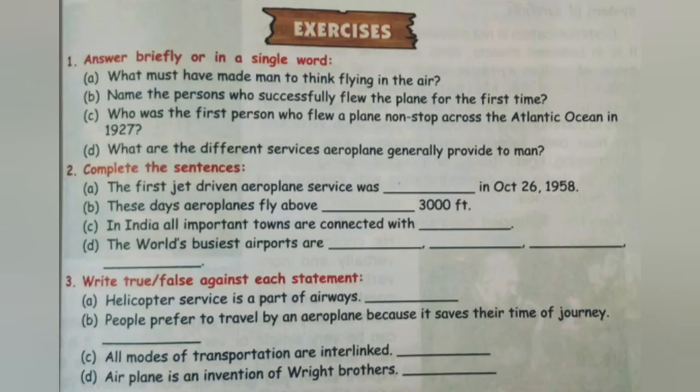Now look at the exercise of this chapter — complete the sentences. The first jet-driven aeroplane service was Boeing 707, on October 26, 1958. These days aeroplanes fly above the weather zone at 30,000 feet. In India, all important towns are connected with air services. The world's busiest airports are Heathrow, De Gaulle, Kennedy, and Changi.